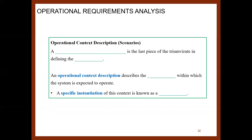In terms of the operational context description or scenarios, the description of an operational context is the last piece of the triumvirate in defining the system concept. An operational context description describes the environment within which the system is expected to operate, and a specific instantiation of this context is known as a scenario.